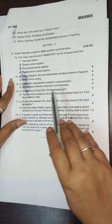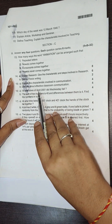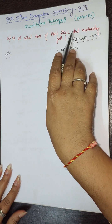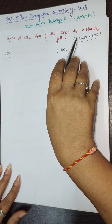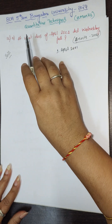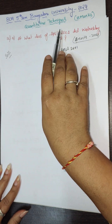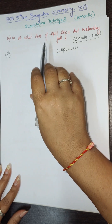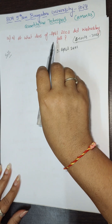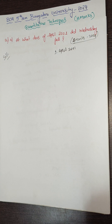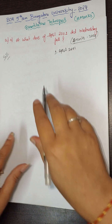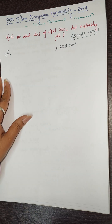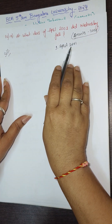Question 16 has two sub-questions, a and b, four marks each. The first question is: at what dates of April 2001 did Wednesday fall? They asked us to find which dates in April 2001 were Wednesdays. To solve this, we first determine the day of 1st April 2001 and then find the Wednesdays in the month.